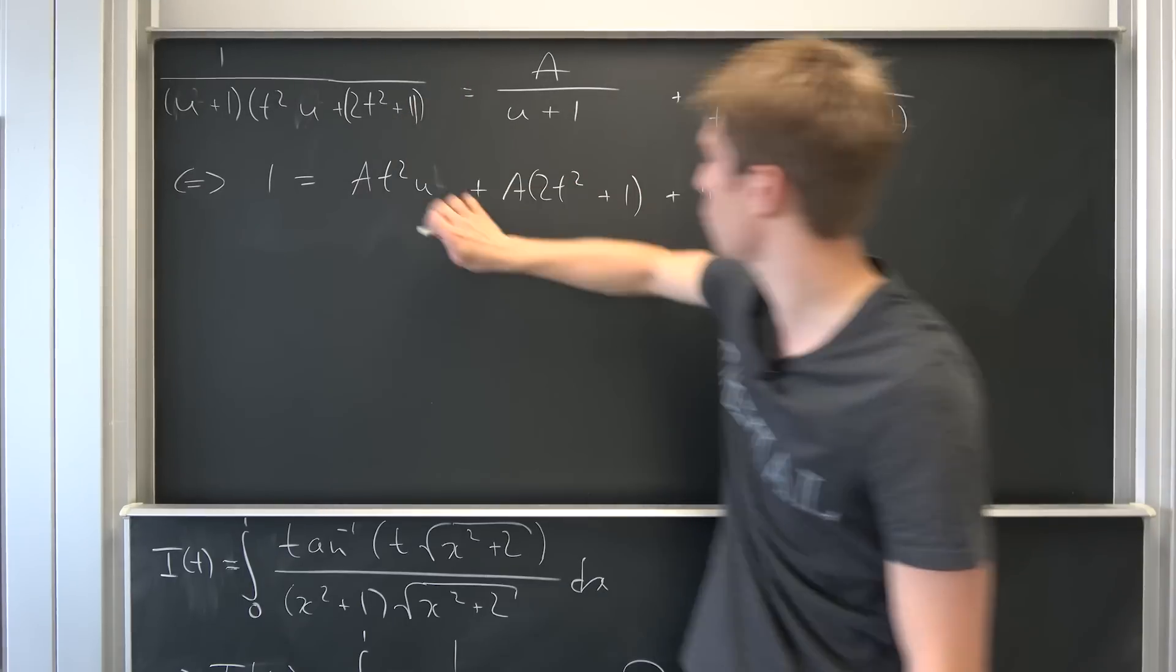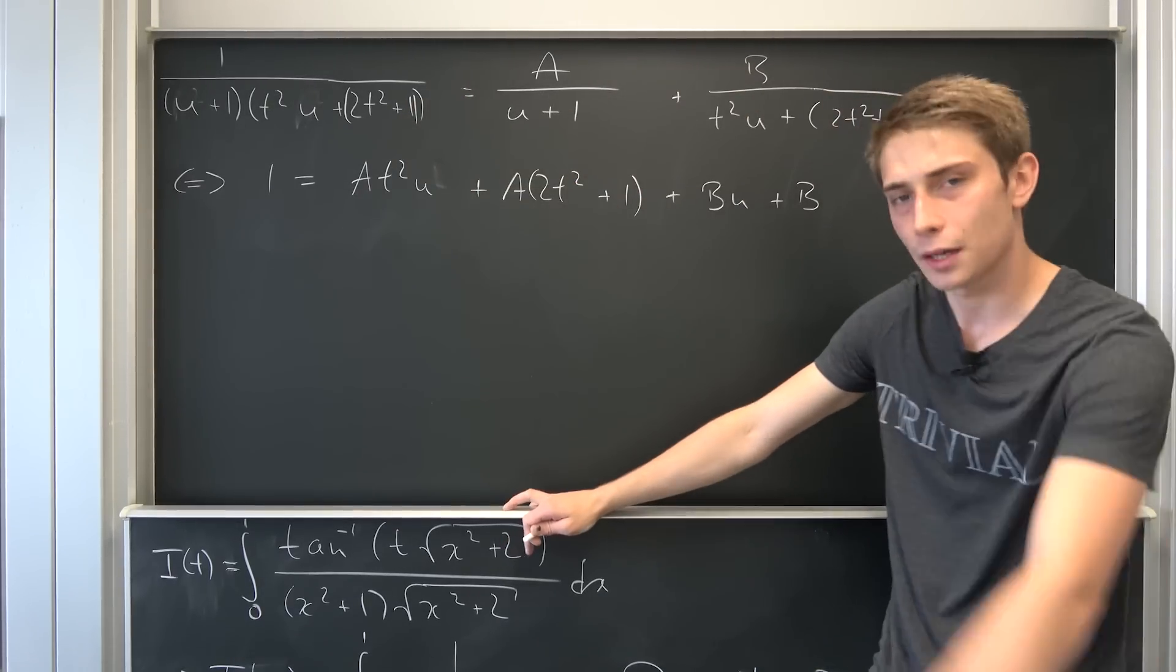Why is u squared right here? No, we have a first degree polynomial. I'm stupid. Never mind.